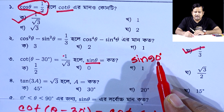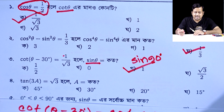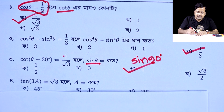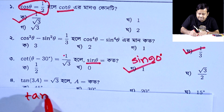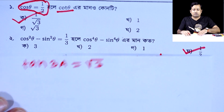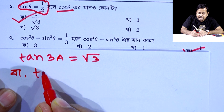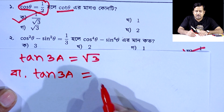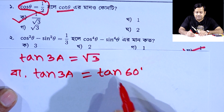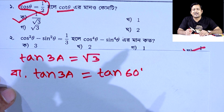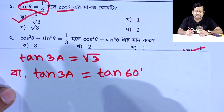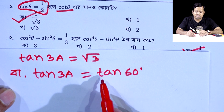The answer is: A is equal to root 3. We say that A is equal to root 3. We know that root 3 is equal to root 3, and we confirm the first result is equal to root 3.